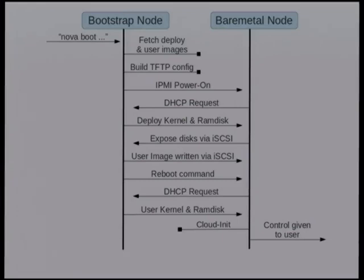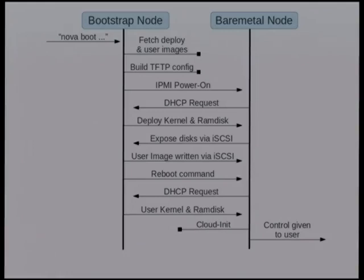There's a small extra service running on the Nova node for bare metal that receives that iSCSI target information, mounts those disks over iSCSI, copies the image onto them, and then sends a reboot command back. Your bare metal node then reboots into the user image - whatever that might be, perhaps an Ubuntu Cloud image with a Puppet or Salt client pre-installed. It joins your cloud, gets a hostname and IP, and does its work.